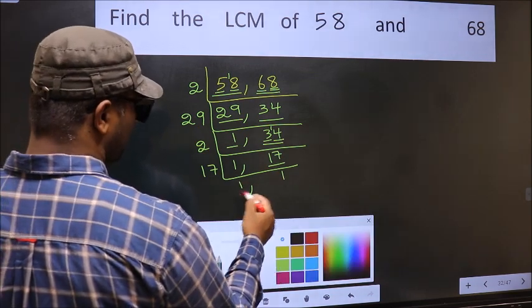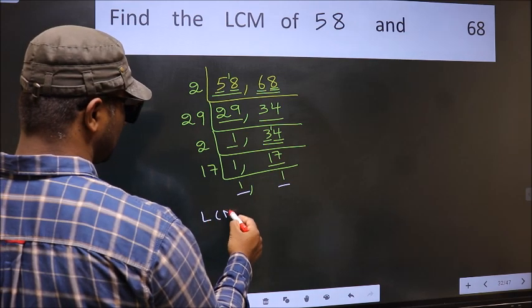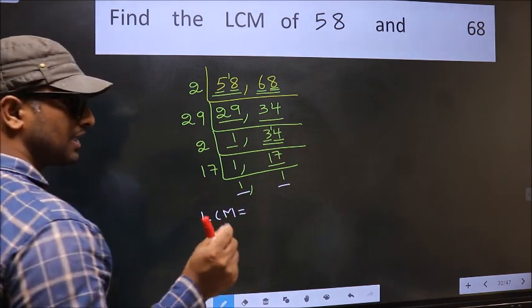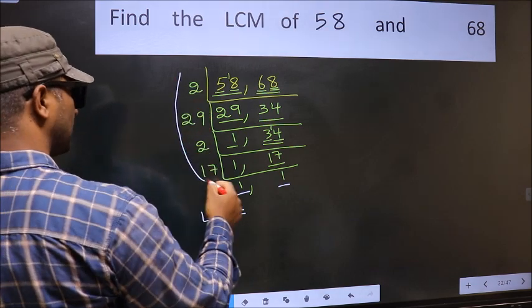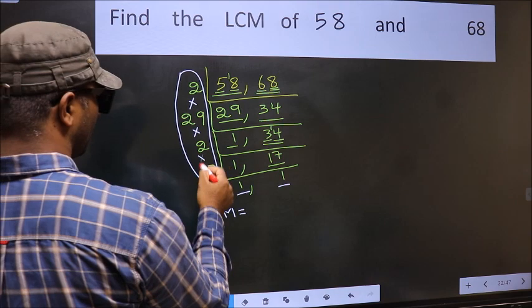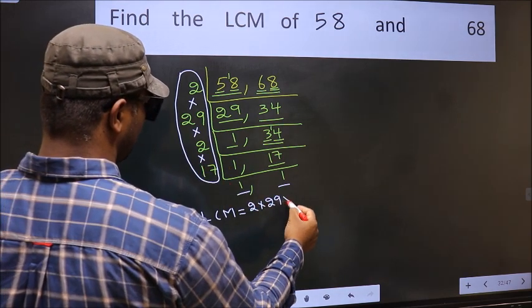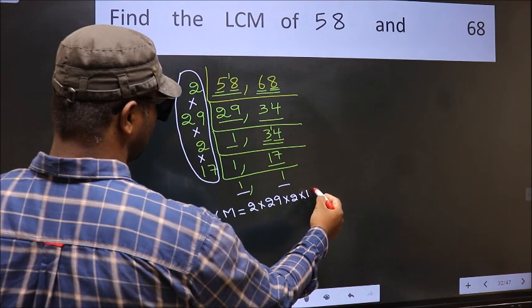So we got 1 in both the places. So our LCM is the product of these numbers. That is 2 into 29 into 2 into 17.